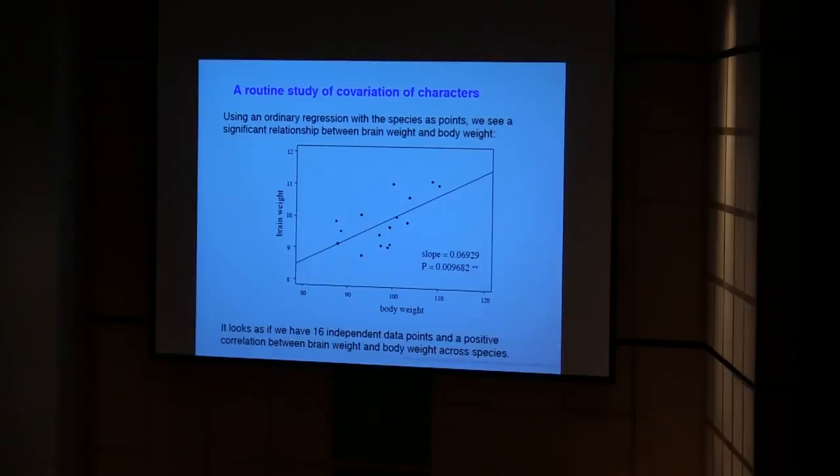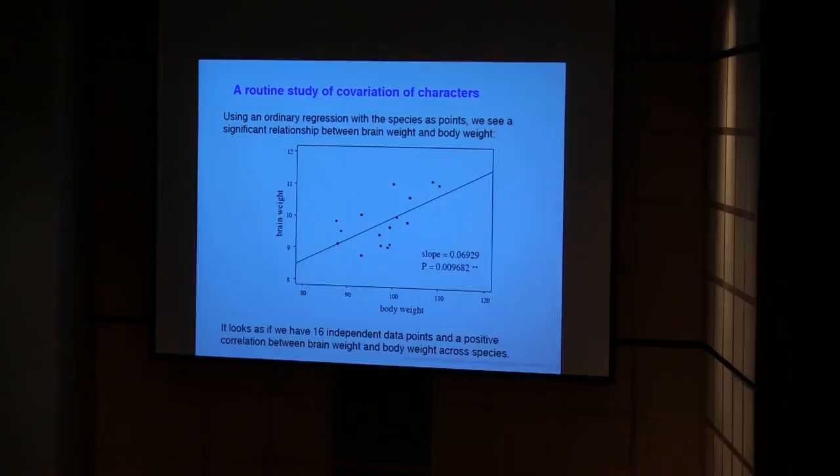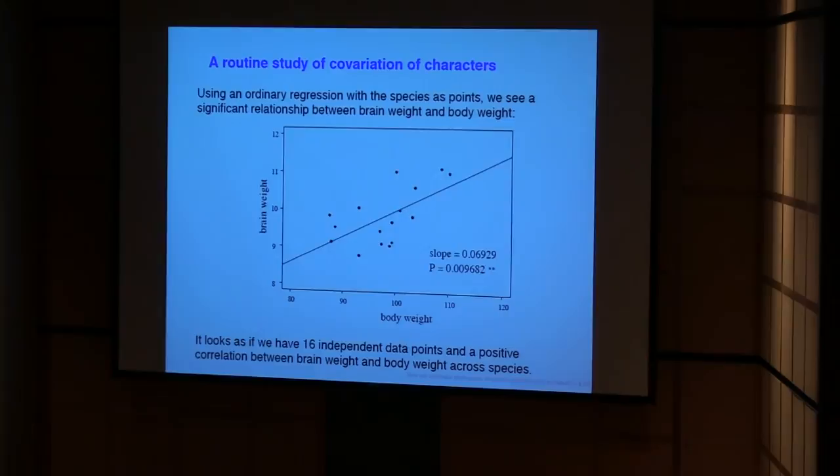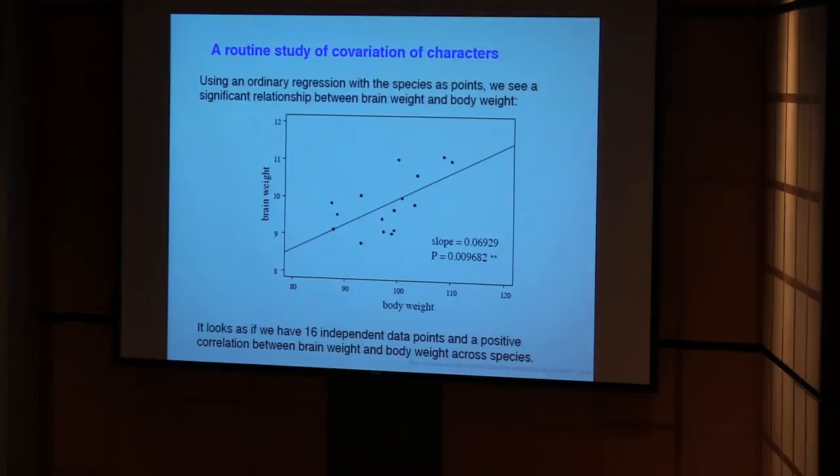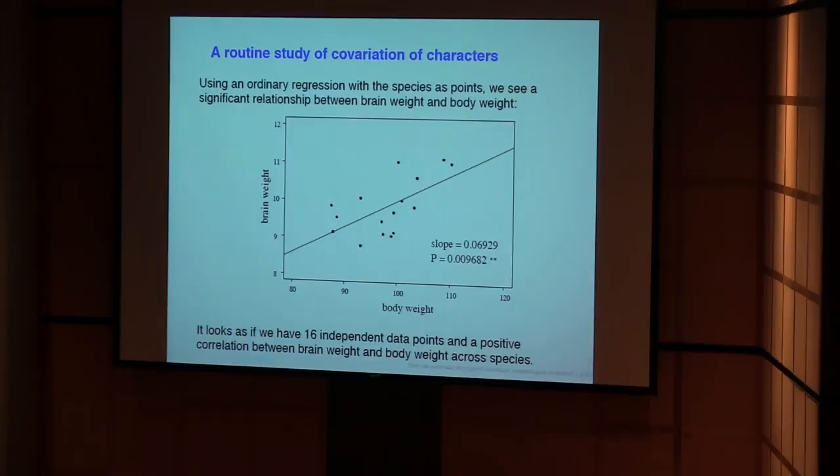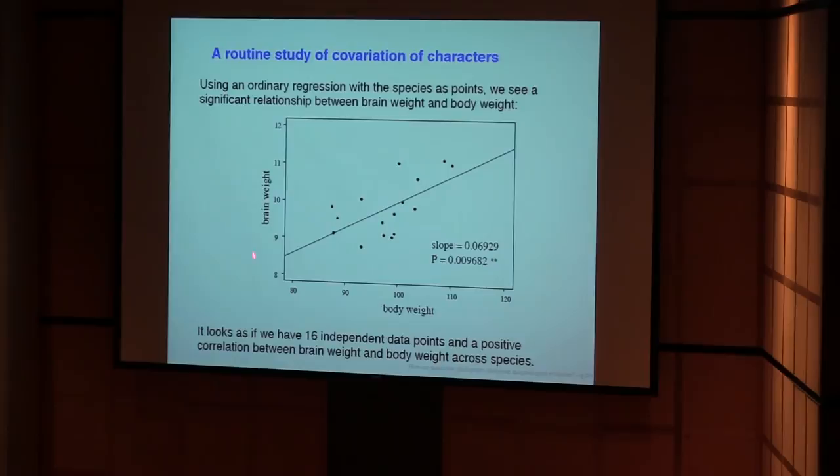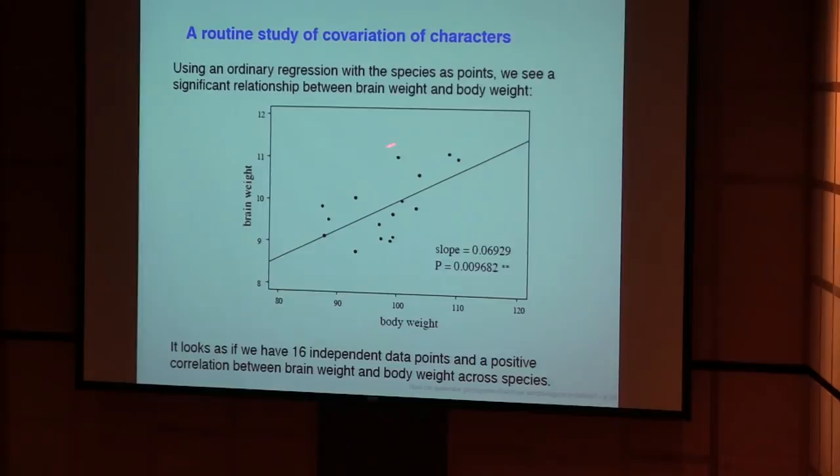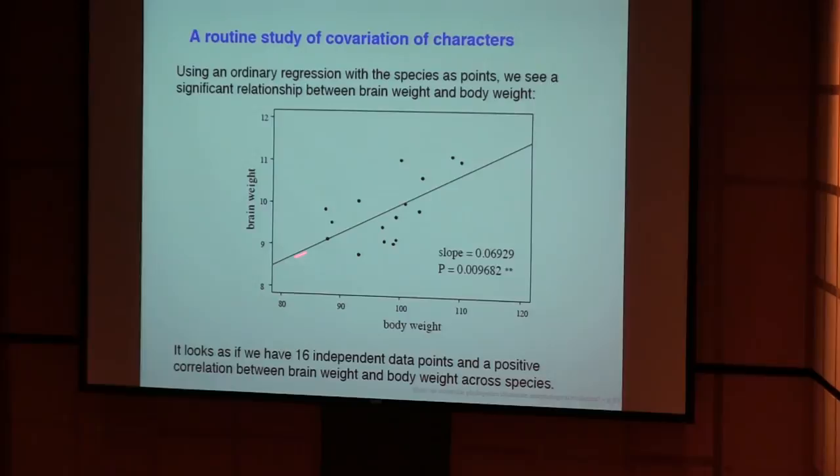And I'll do that by starting with an old problem, which was a problem that came up in the 1980s, and that was that people were studying the relationship between change of different characters in evolution by comparing different species. The dominant way that they did this was to simply take one character, I'll call it brain weight, another character, we'll call it body weight, collect data from a number of species and then to fit a regression line, fit a straight line to that data.